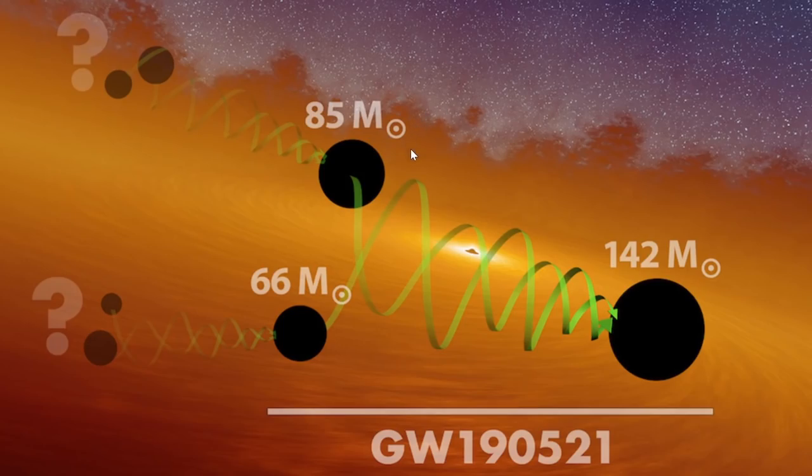But now the scientists recently were also able to analyze the masses of these two black holes and discovered that, well, they don't really make sense. The mass of these two black holes is, as you can see, 85 and 66 masses of the Sun.